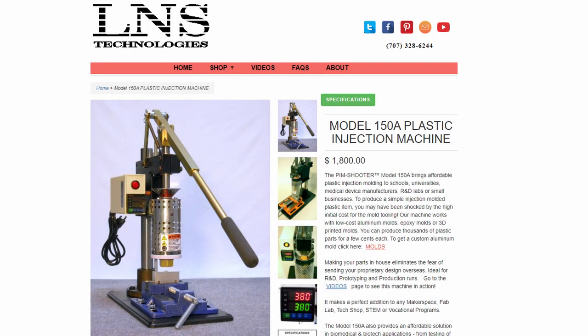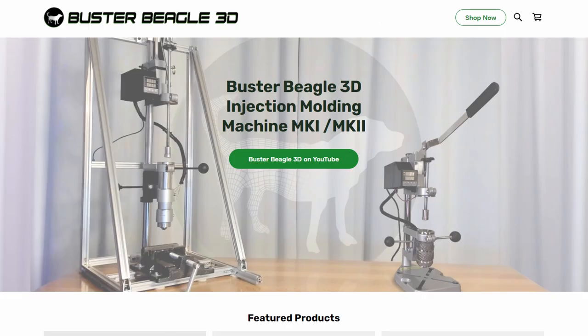One is the LNS-150A, and then the other is the Buster Beagle 3D, and there are others as well. The thing to be careful about these is they may not perform the way you expect, so you have to be aware of a few things. Let me talk about the factors that are important for a desktop injection molding machine.